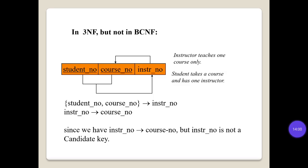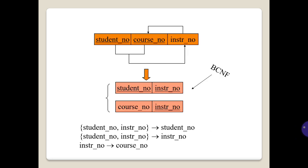Consider a relation that is in 3NF but not in BCNF: an instructor teaches one course only, and a student takes a course and has one instructor. The attributes are StudentNo, CourseNo, and InstructorNo. Since InstructorNo determines CourseNo but InstructorNo is not a candidate key, this relation is not in BCNF. Look at these pictures for the diagram.